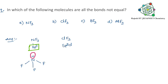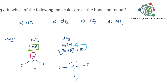Coming to ClF3, its hybridization is sp3d. You can calculate this hybridization using the trick explained in our channel. Geometry-wise, it is T-shaped, and two lone pairs are occupying equatorial positions.